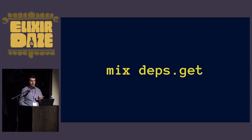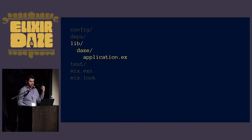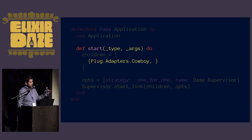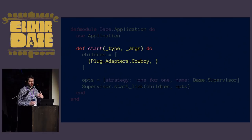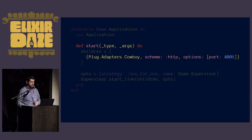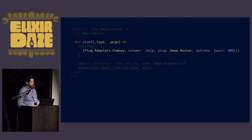The first thing we want to do is add Cowboy to our supervision tree, so let's go into our application module. For the top-level supervisor we're going to add Cowboy. Plug is already doing a lot of the heavy lifting - this is all we need to do with Cowboy: use the adapter. We'll use the HTTP scheme, expose it through port 4001, and pass a module that satisfies the Plug specification.